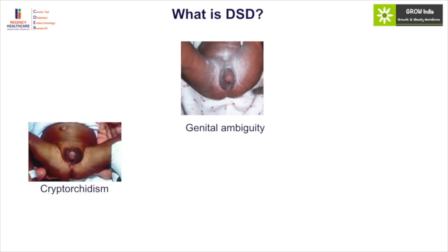Obviously, if there is a typical case of genital ambiguity one would consider DSD, but also consider DSD in any individual who presents with bilateral cryptorchidism. This could be a very severe manifestation of virilization seen in the setting of congenital adrenal hyperplasia. In the newborn period this could be lethal because of the risk of salt-wasting crisis, or later they can present with cyclical hematuria in the simple virilizing form or 11-hydroxylase form.